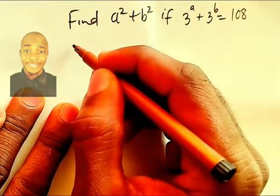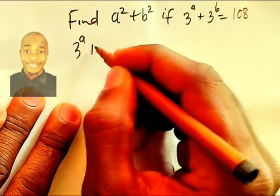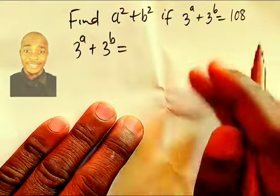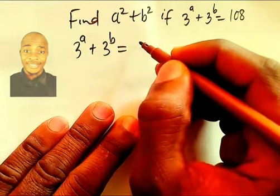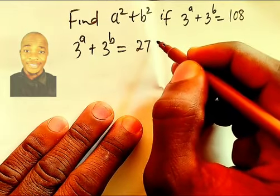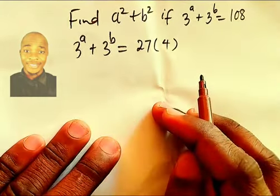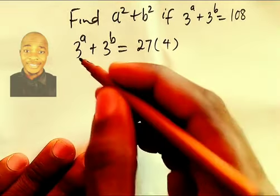We're going to have 3^a + 3^b equals to... we're going to write 108 as what? As 27, then multiply by 4. Because 27 times 4 is going to give us 108.